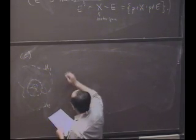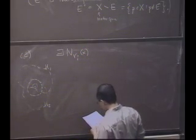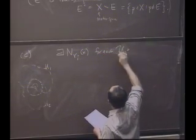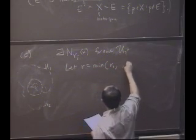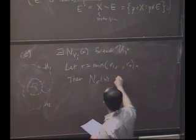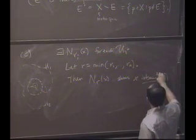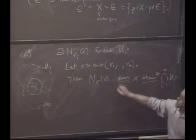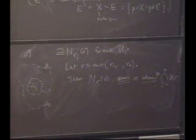Great. So this is the sketch here. There exists a neighborhood R sub i of x for each U sub i. So let's let R be the minimum of the R1 through R sub n. And then the claim is that n sub r sub x shows x is interior to the intersection of the U sub i's, i goes from 1 to n. And this is a sketch, so I haven't done the work, but I've just indicated how it goes. That's the main obstacle.